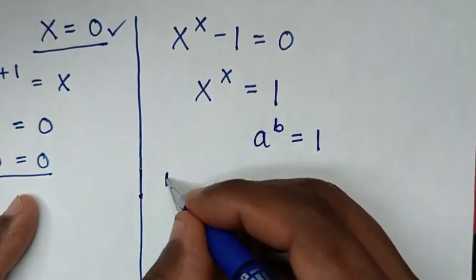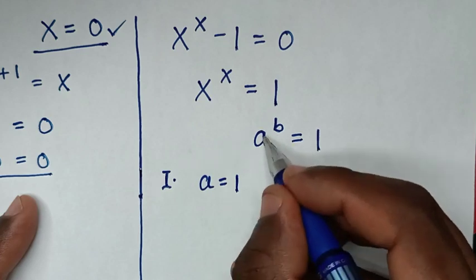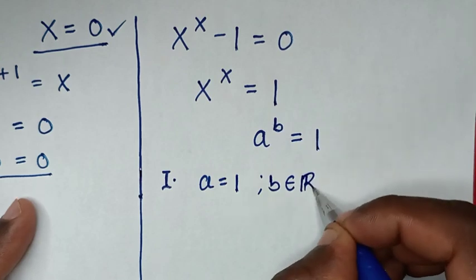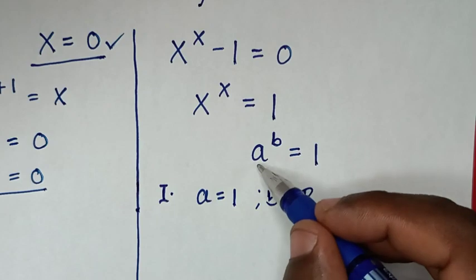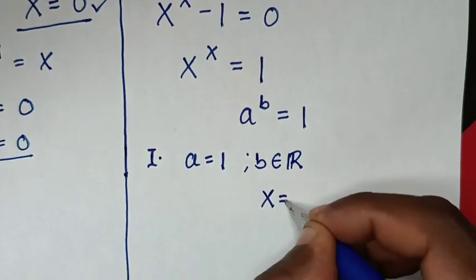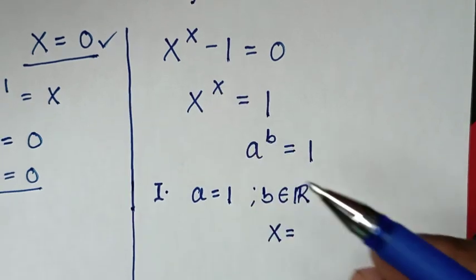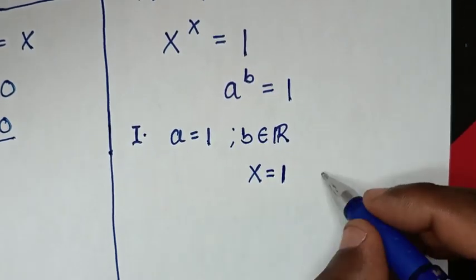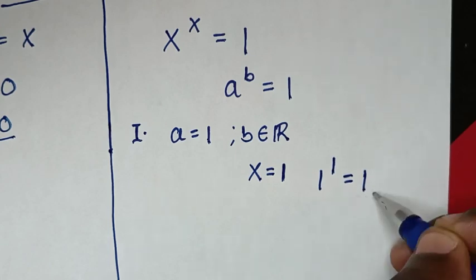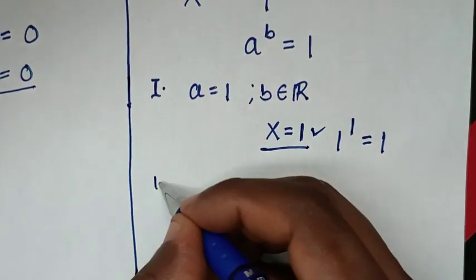The first case: if a is equal to 1, then b can be any real number. So if x equals 1, it will be 1 power of 1, and we know that 1 power of 1 equals 1, so this is correct. It is true for x equals 1.